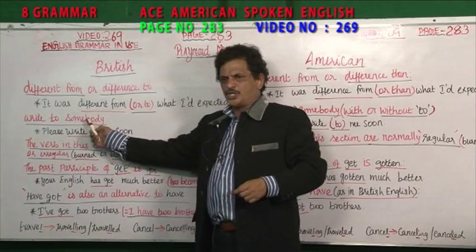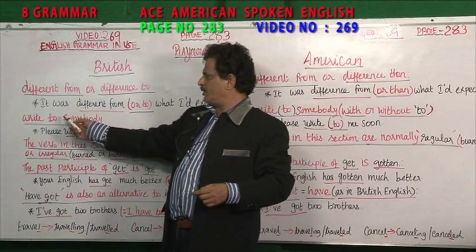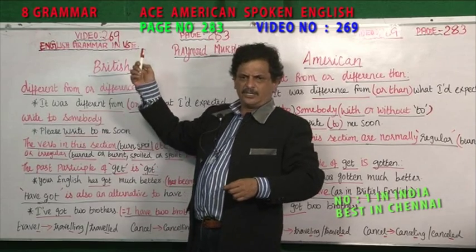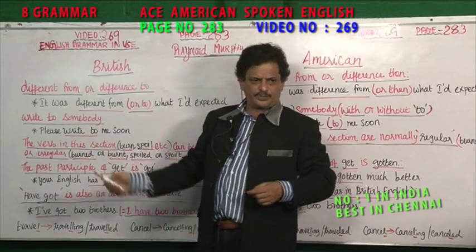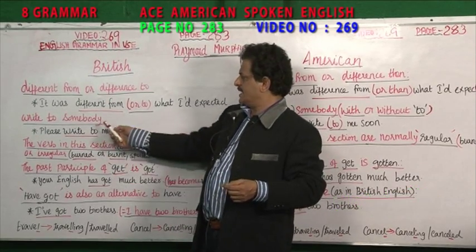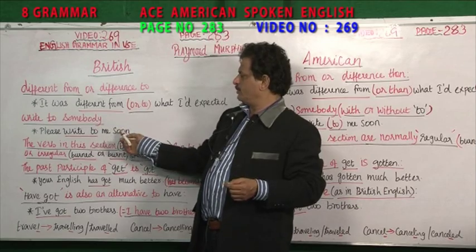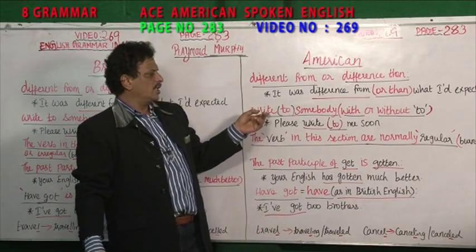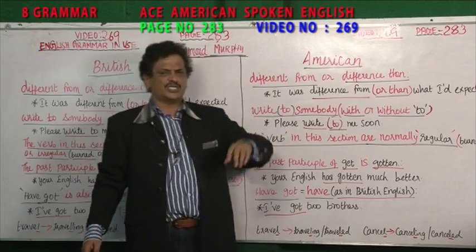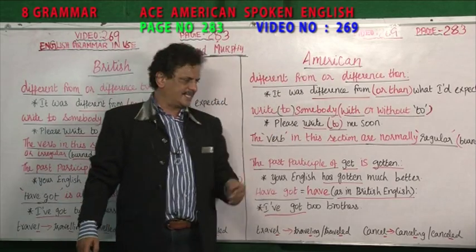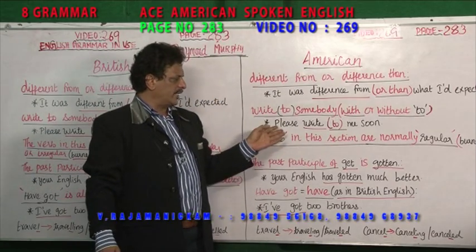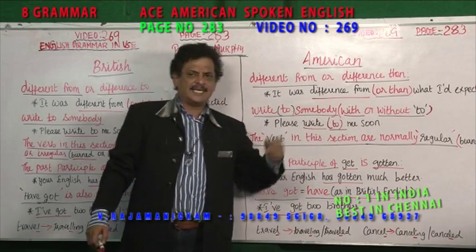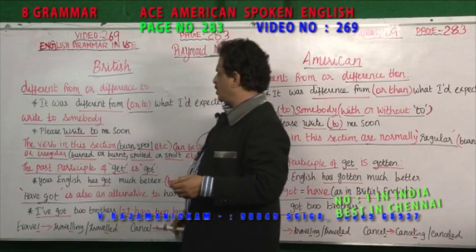In British English, after "write" you use the preposition "to" with an object: "Please write to me soon." In American English, the "to" is not necessary — you can say either "Please write me soon" or "Please write to me soon."